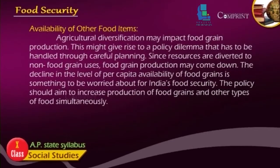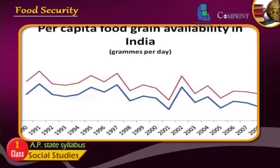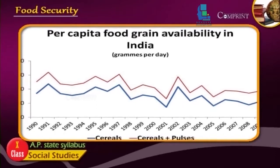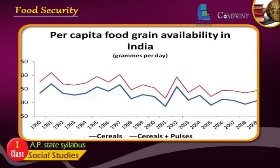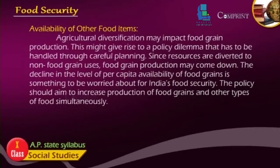Agricultural diversification may impact food grain production, giving rise to a policy dilemma that has to be handled through careful planning. Since resources are diverted to non-food grain uses, food grain production may come down. The decline in per capita availability of food grains is something to be worried about for India's food security. The policy should aim to increase production of food grains and other types of food simultaneously.